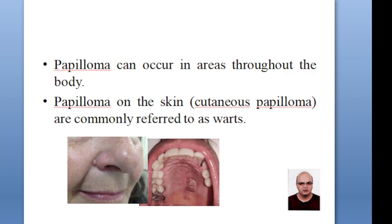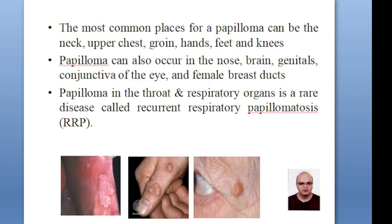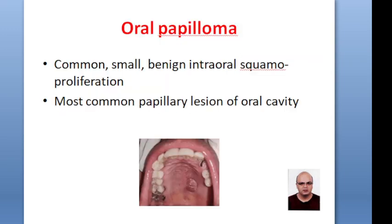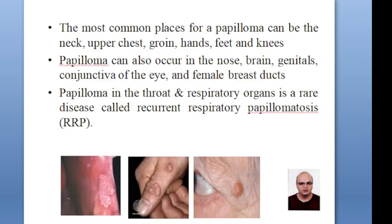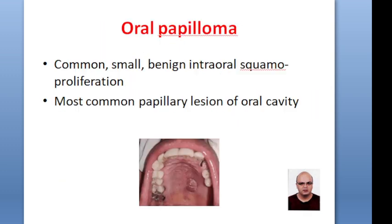On the skin, they are called cutaneous papillomas or warts. The most common places for papillomas are neck, chest, groin, hands, feet, and knees. They can also occur in the nose, brain, genitals, and conjunctiva of the eye. In the throat and respiratory organs, they can cause recurrent respiratory papillomatosis.